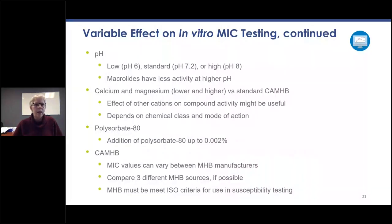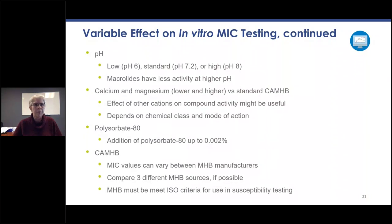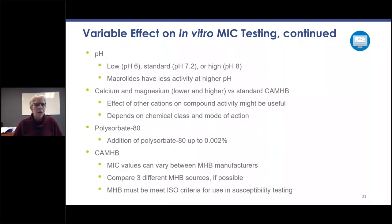For pH, testing at low, standard and high pH is important. Macrolides, for example, have less activity at lower pH. Look at calcium and magnesium concentrations versus the standard concentration in Mueller-Hinton broth — calcium is 20 to 25 mg per liter, magnesium is 10 to 12.5 mg per liter — and test at lower and higher concentrations. It's useful to look at the effect of other cations depending on the chemical class and mode of action, such as iron for a siderophore-bound compound. Also look at the addition of polysorbate 80. MIC values can vary between MHB manufacturers, so it's important to compare at least three different MHB sources. The MHB used must meet the ISO criteria for use in susceptibility testing.